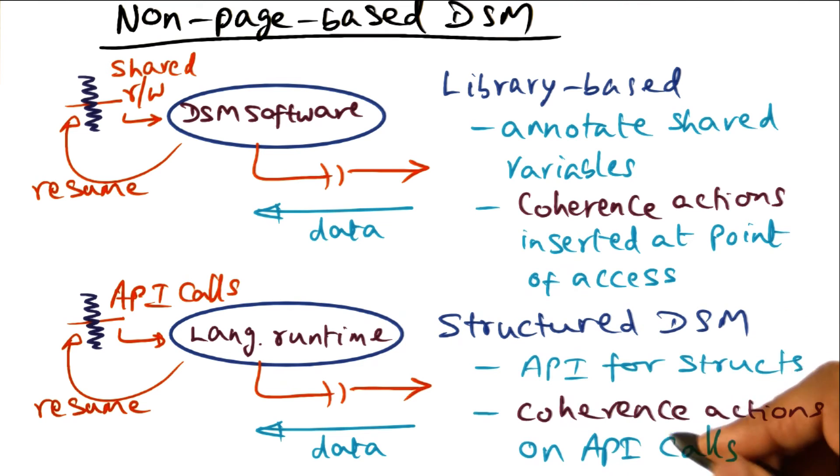Again, there is no OS support needed for this, and the structured DSM is a very popular approach that has been used in systems such as Linda, Orca, and Stampede. Stampede was done at Georgia Tech, and successors to Stampede include Stampede RT and PTS.